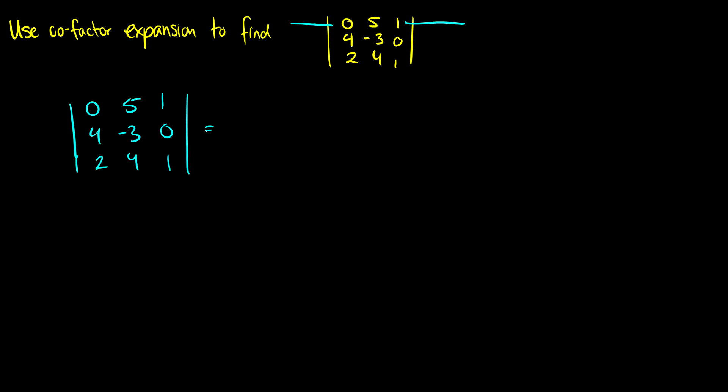Let's write this out formally. This is going to be A11C11 plus A12C12 plus A13C13. A11 is 0, so C11 doesn't matter. A12 is 5. What's C12? It's negative 1 to the power of i plus j, so that's negative 1 to the 1 plus 2. Then we multiply by the determinant of the submatrix A12. In this case, A12 means we take out the first row and the second column, so we're left with 4, 0, 2, 1.